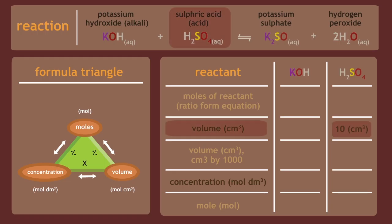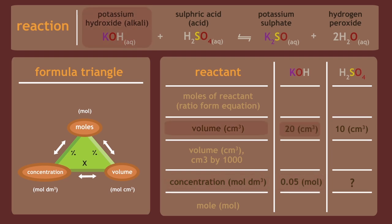Here's a challenge: 10 cm³ of a sulfuric acid solution was titrated with 0.05 molar potassium hydroxide. If the acid required 20 cm³ of potassium hydroxide for neutralization, what was the concentration of the acid? Follow the steps as before — the blank table, formula triangle, and equation are all displayed. Pause the video and continue when completed.